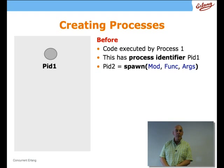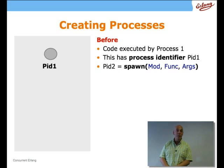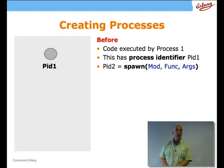What we need to find out first is how you create a process, and that is done by the Spawn BIF. What Spawn does is it's passed an argument which is a module name, function name, and list of arguments — just like apply. What happens is that creates a new process which runs that function from that module with those arguments as its code.